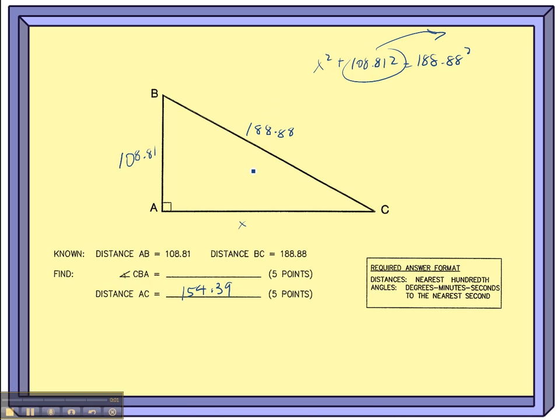Last time we left off, we just used the Pythagorean Theorem to find side AC, using the Pythagorean Theorem backwards. Now we have to find the measure of angle CBA, which is basically angle B in this right triangle.